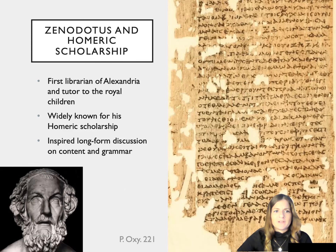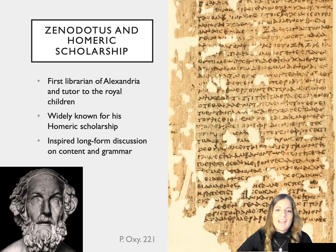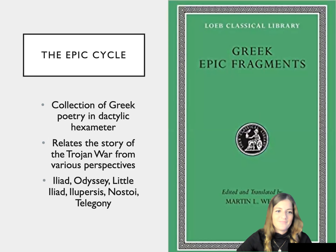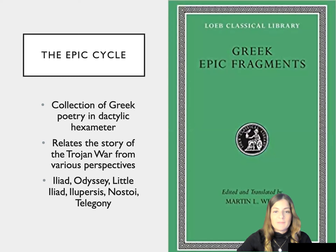Zenodotus wasn't the first Homeric scholar, or actually the first librarian of Alexandria who ended up being a Homeric scholar. He was followed by Aristophanes of Byzantium, also the head of the library, and Aristarchus of Samothrace, who both produced second-century versions of the text of the Iliad. The Iliad was but part of this robust scholarly tradition of glossing, explaining, and describing what's happening in literary texts for school children and advanced scholars alike.